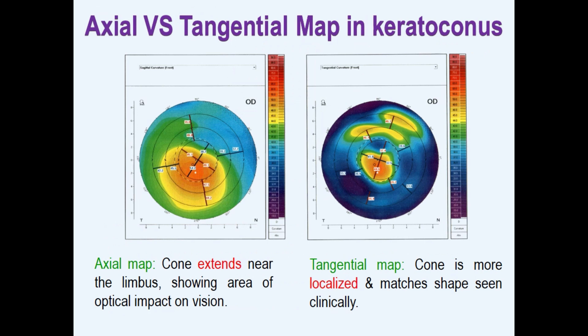For example, in this case of keratoconus, in the axial map the cone extends to the periphery, while in the tangential map the cone is more localized and matches its clinical appearance.